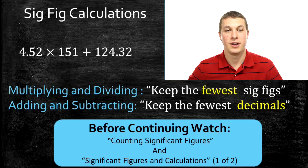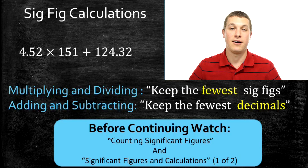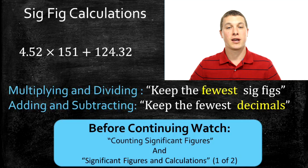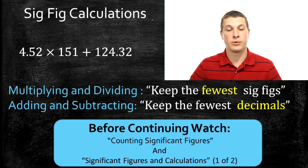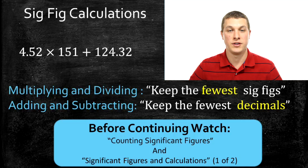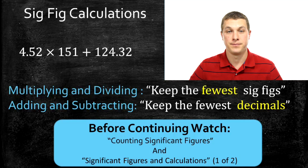In this episode of Real Chemistry, we're going to talk about significant figures and calculations again. This time we're going to combine the rules that we've already learned from multiplication and division with the rules we've learned for addition and subtraction.